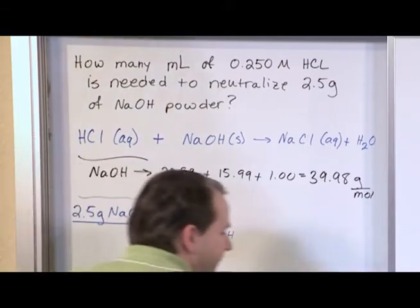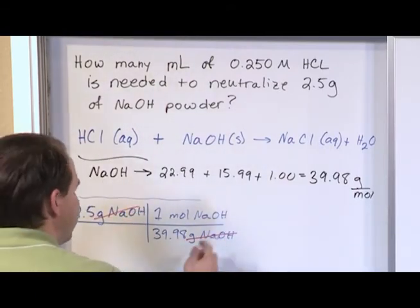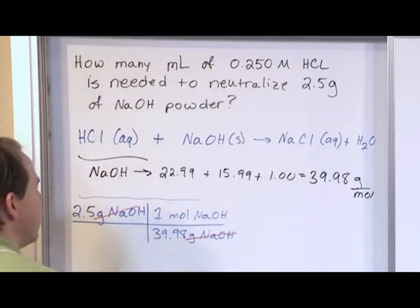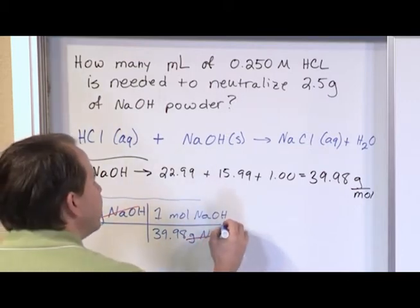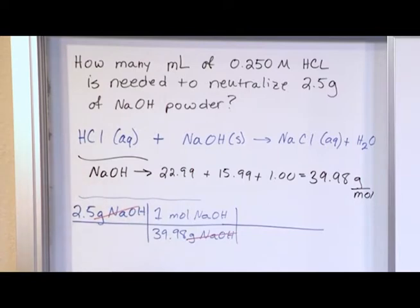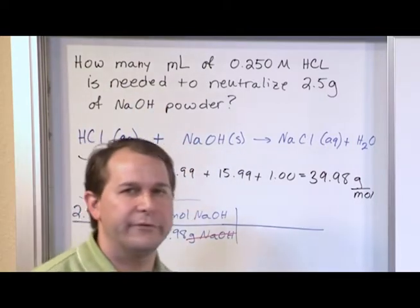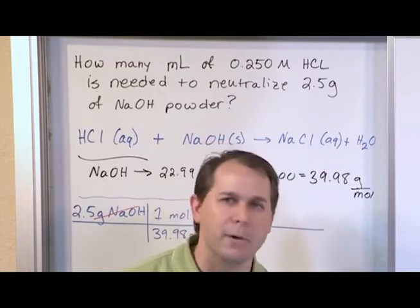And the reason I arrange it this way, just like in all of our stoichiometry problems, is so I can cancel grams of sodium hydroxide with grams of sodium hydroxide. So what you've done in this calculation, if I were to just stop here, 2.5 times 1 divided by this, is I've basically converted my initial quantity to moles of sodium hydroxide.